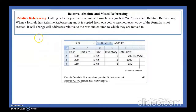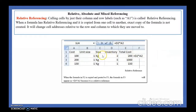Our next topic is relative, absolute, and mixed referencing. What is relative referencing? Relative referencing means calling a cell by just its column label and row number, such as A1 — that is called relative referencing. Normally we use relative referencing. For example, suppose in a sheet you have numbers in cells, and in cell D2 you want to display the multiplication result of D2 and A2.